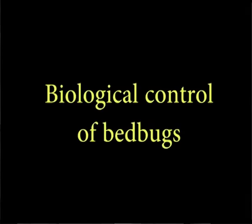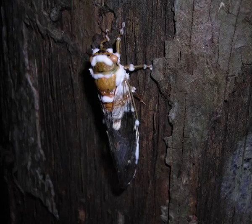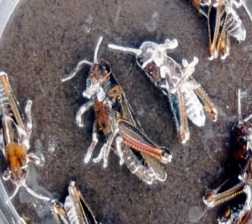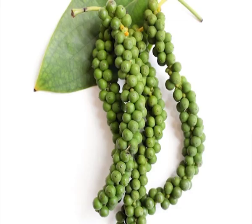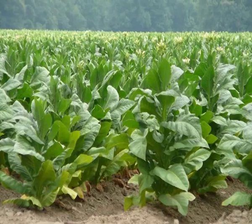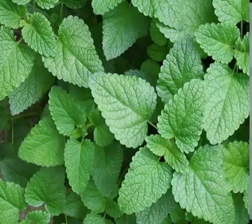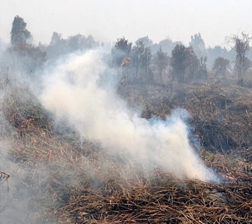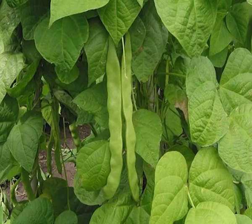Biological control of bed bugs: There are reports available on natural enemies and predators of bed bugs. The fungus Beauveria bassiana is known to infest bed bugs and control their population. Traditional methods of repelling or killing bed bugs include the use of plant extracts such as black pepper, nilgiri oil, tobacco, wild mint and seeds of cannabis. In the middle of the 19th century, smoke from peat fires was recommended as an indoor domestic fumigant against bed bugs. Bean leaves have been used historically to trap bed bugs in houses in eastern Europe.